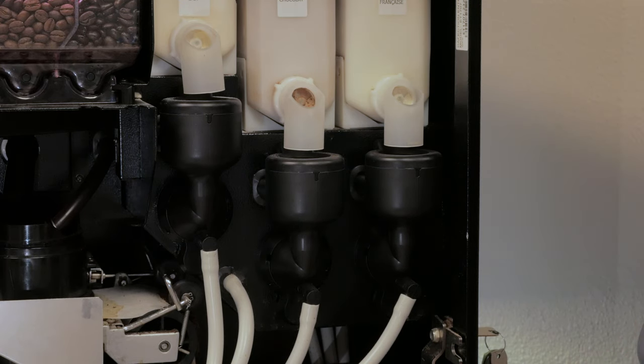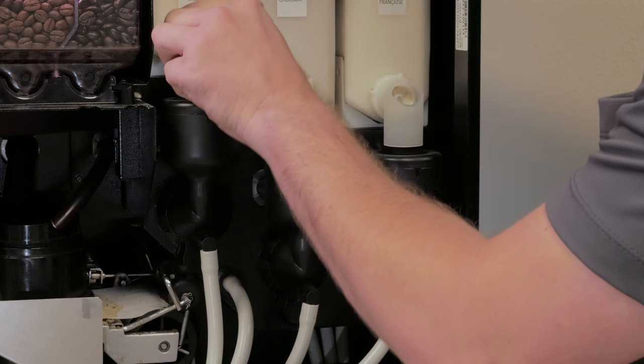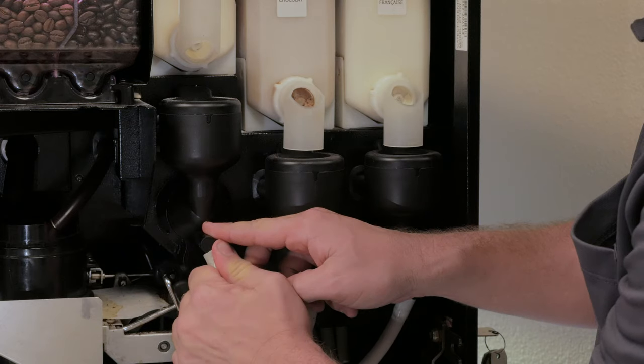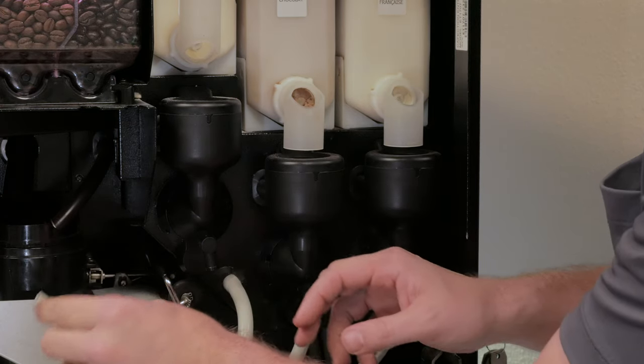What you want to do first is rotate the spigot up to prevent powder from falling into the mixing bowl. Next, you will pull out the tubing located right there.